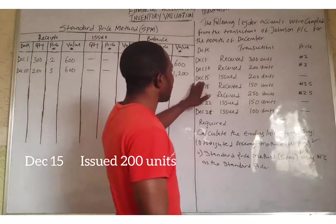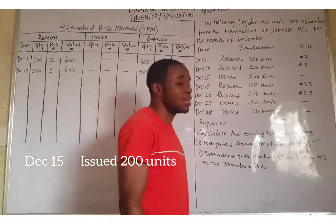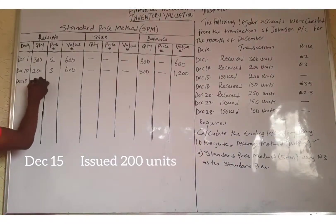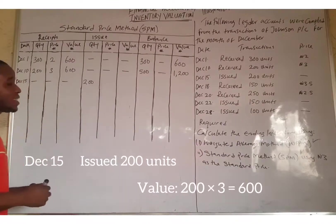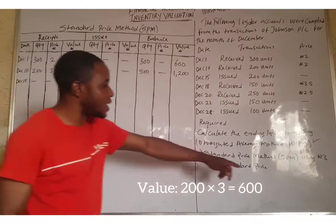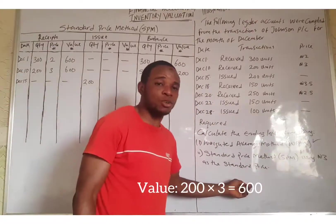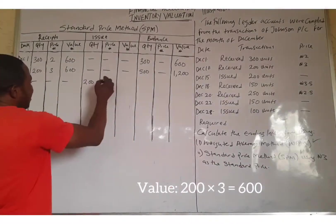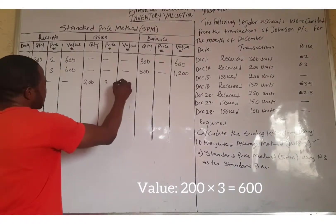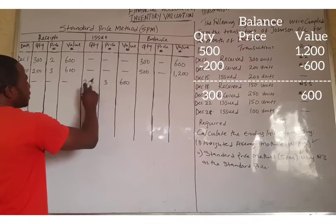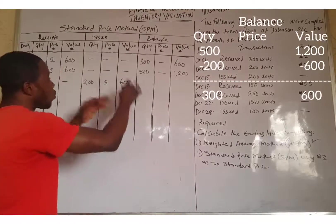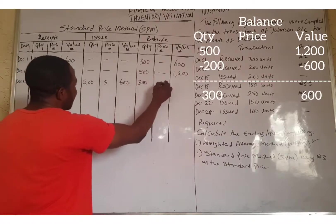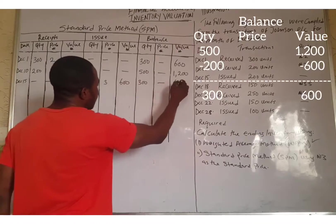On December 15, they issued out 200 units. Since we are dealing with the standard price method and using ₦3 as the standard price, we assign ₦3 to the issue. So 200 times ₦3 equals ₦600. When issued, both quantity and value reduce: 500 minus 200 equals 300 units, and ₦1,200 minus ₦600 equals ₦600.